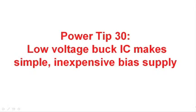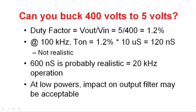In this PowerTip, we're going to take a look at a power system where 5 volts is generated from a 400-volt input. This 400-volt input might be rectified 230-volt AC input line, and the 5-volt output might power a DSP or microcontroller that does things such as power metering or input power calculations. With these kind of requirements, the first topology that you would consider would be a buck regulator. In the buck regulator, the duty factor is related to the output voltage divided by the input voltage, or 5 divided by 400 volts, which is about 1%.